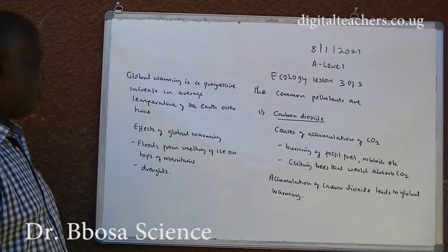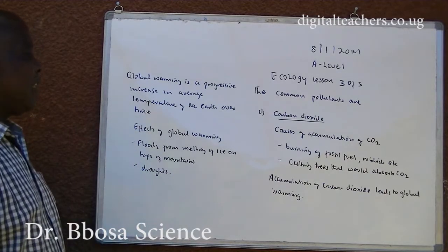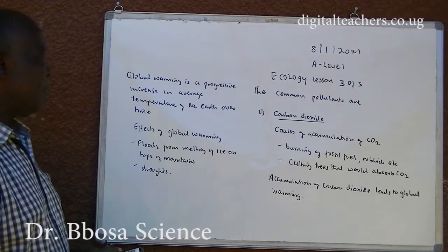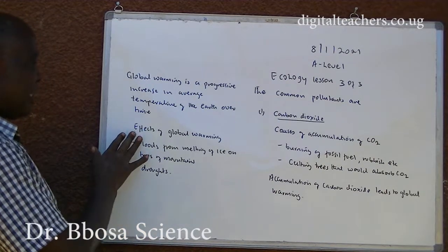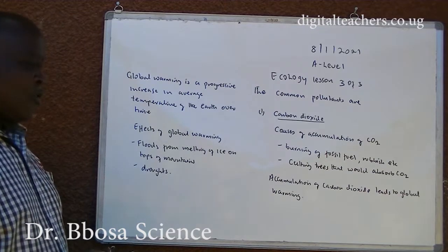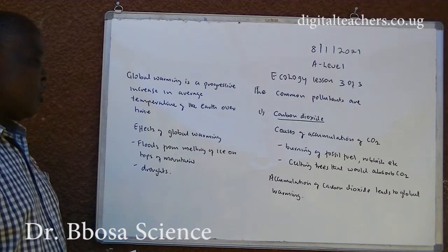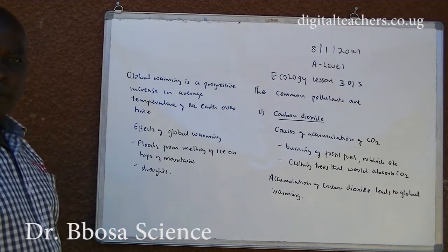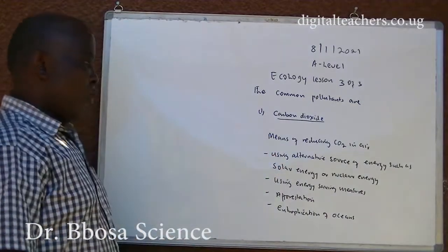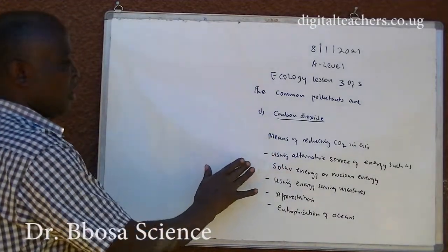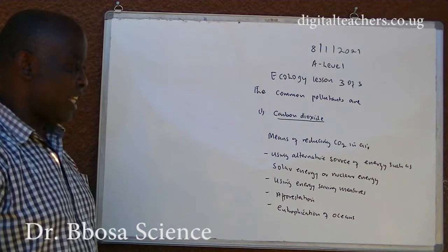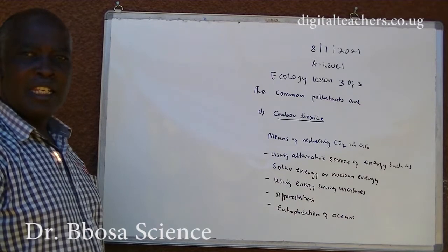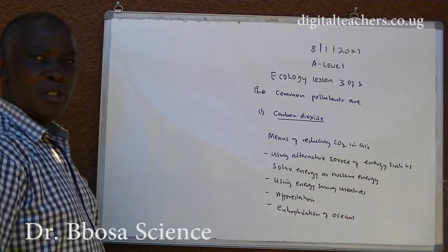The accumulation of carbon dioxide leads to global warming. Global warming is a progressive increase in the average temperature of the earth over time. Effects of global warming include flooding from melting of ice on tops of mountains, and droughts. Methods of reducing carbon dioxide in the air include using alternative sources of energy such as solar energy and nuclear energy instead of fossil fuels.